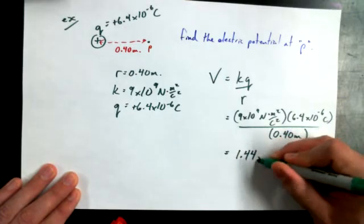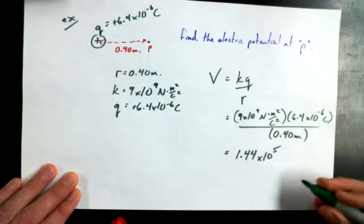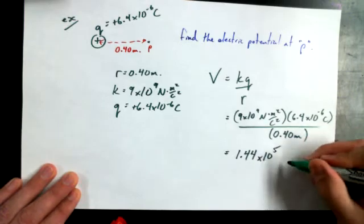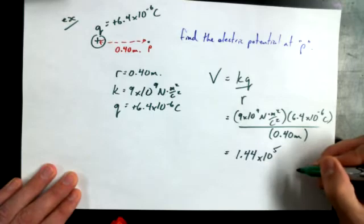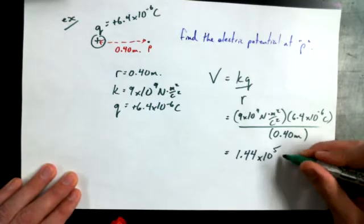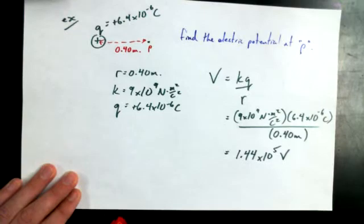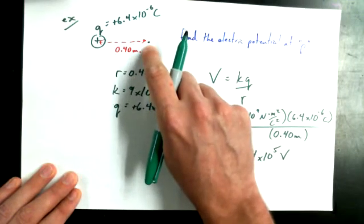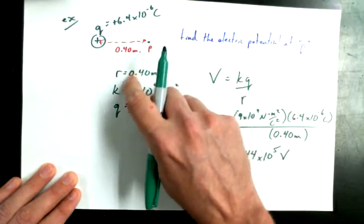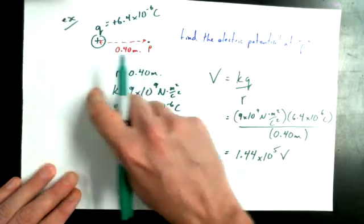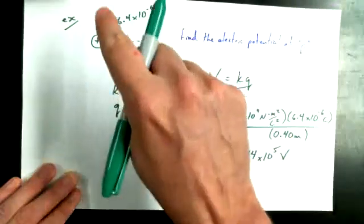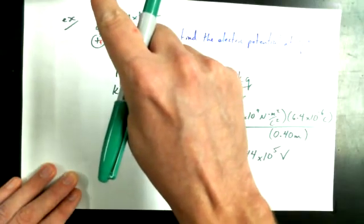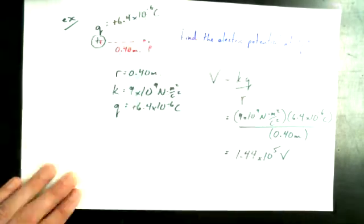The answer is 1.44 times 10 to the power of 5 volts — we could say joules per coulomb, but it's the same as volts. Now, where else could we choose that would also have that same electric potential? Anywhere that's the same distance away from the charge — that's an equipotential surface. You could be above the page, as long as you're the same distance away.